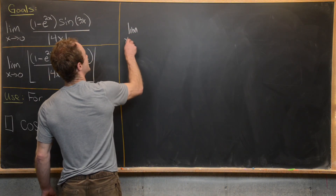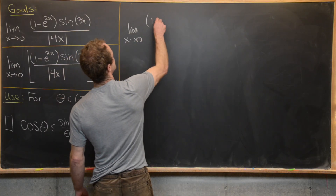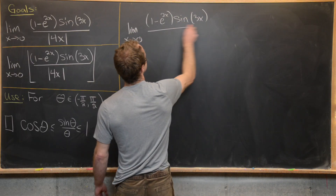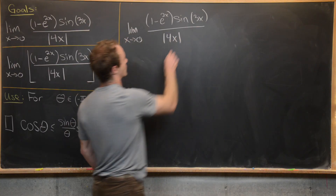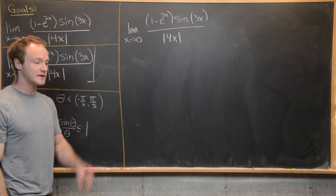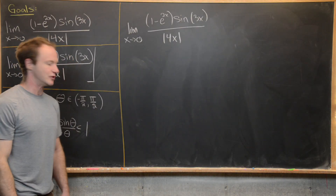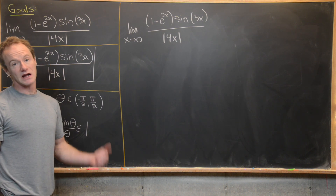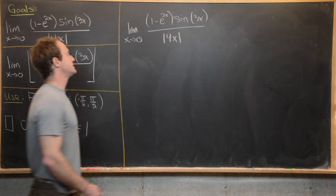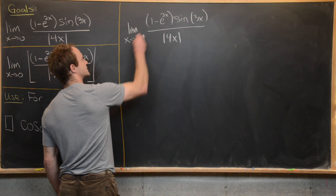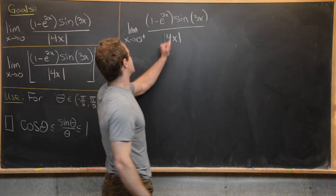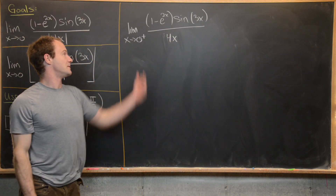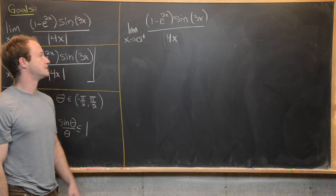Let's calculate this first limit. We've got the limit as x goes to zero of 1 minus e to the 2x times sine of 3x over the absolute value of 4x. Technically we need to calculate two things because of the absolute value — we need a right-handed limit as well as a left-handed limit. If we're doing the limit as x approaches zero from above, the absolute value of 4x is equal to 4x.